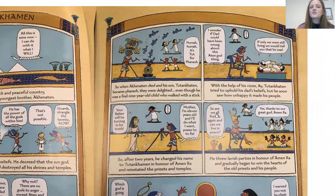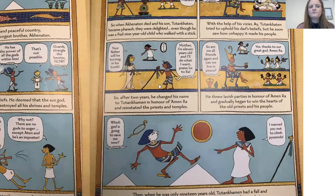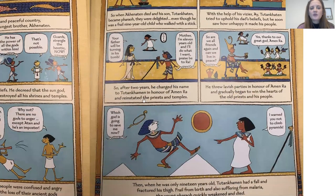So when Akhenaten died and his son Tutankhamen became Pharaoh, they were delighted, even though he was a frail nine-year-old boy who walked with a stick. 'Hurrah, hurrah, it's Tut for Pharaoh!' With the help of his vizier, Tutankhamen tried to uphold his dad's beliefs, but he soon saw how unhappy it made his people. 'I wonder if dad could have been wrong about this Aten and God thing.' 'If only we were still living, we would tell you that he was.' After two years he changed his name to Tutankhamen.